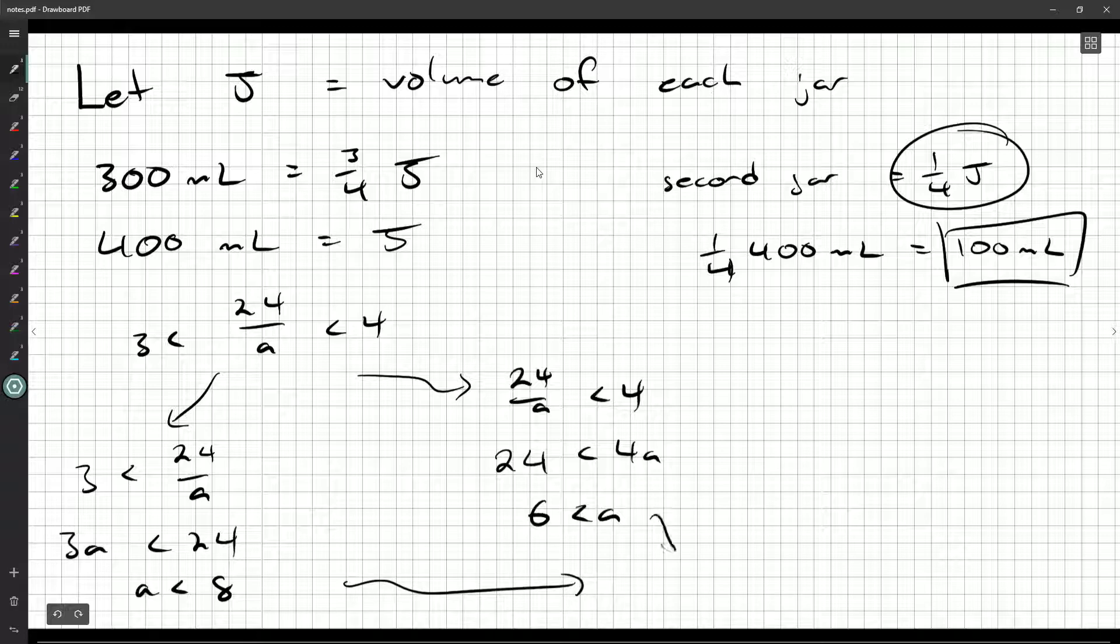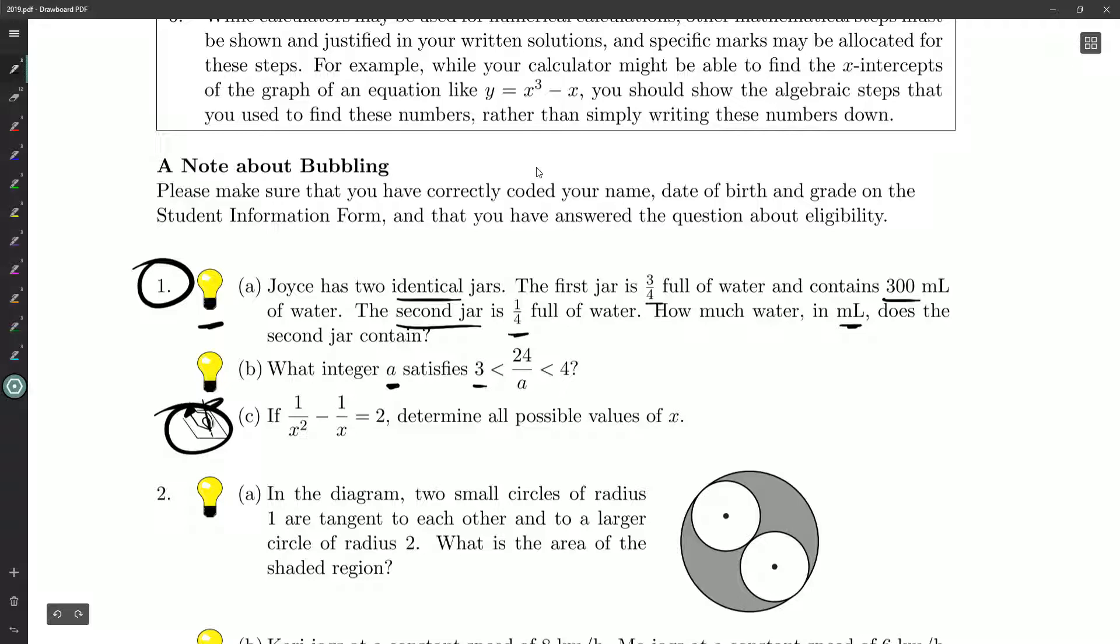Now if we combine these two again, 6 is less than A is less than 8. The only number that satisfies that is 7. Now you can even grab your calculator and double check this, or you can just put 7 in the little box provided in the bubble sheet. You get full marks just from having 7 written down.